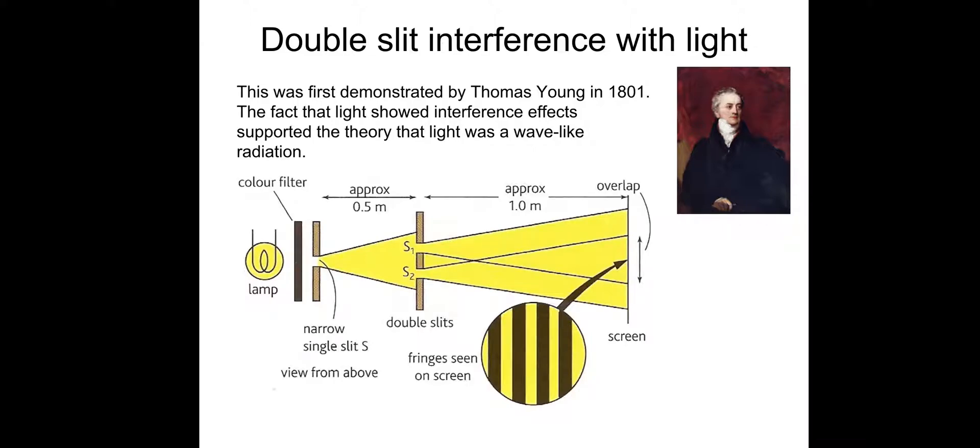This was the experiment that Thomas Young used. We had a lamp with a color filter, and the color filter meant that the waves used in the experiment were monochromatic, of single color. It's illuminated onto a narrow single slit S, and then diffracted out, which illuminates S1 and S2. I touched on this in the previous lesson. We need S1 and S2 to be illuminated by light which is coherent, so that means it has the same frequency, which it does because it's the same light, and it also needs to be in phase.